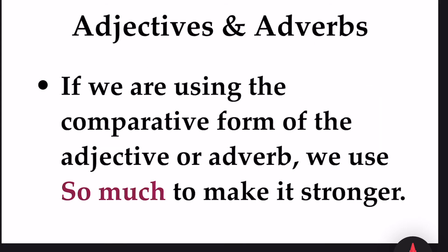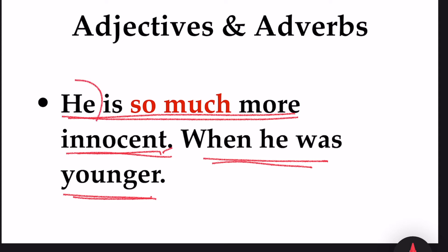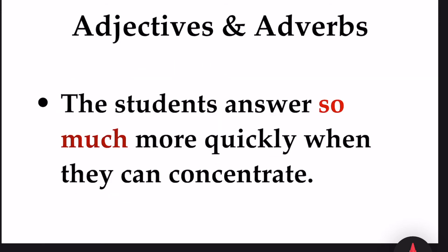If we are using the comparative form of the adjective or adverb, we use so much to make it stronger. Look at the example here. He is so much more innocent when he was younger. Here we are comparing two stages of the man. So, we have used so much to make it stronger. The students answer so much more quickly when they can concentrate.